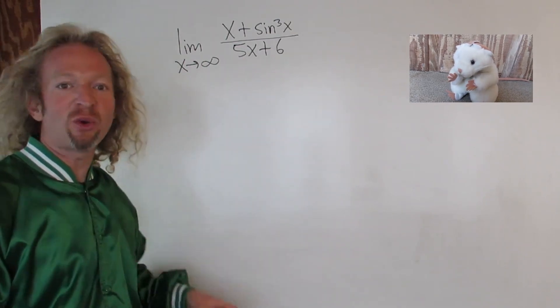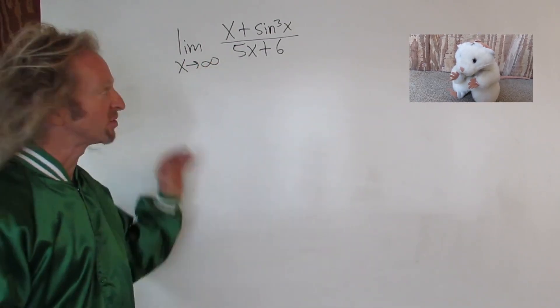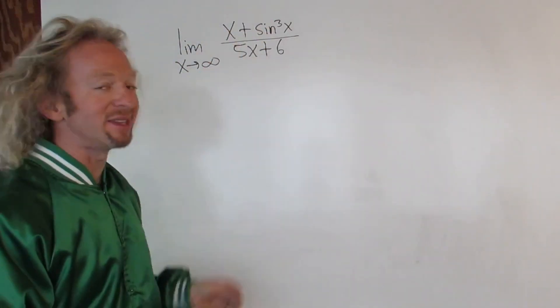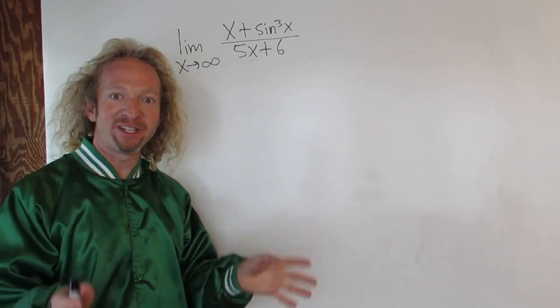In this problem, we have a limit and x is going to infinity. It is going forever, right? It's getting super big. And the question is, what happens to this when x goes to infinity?